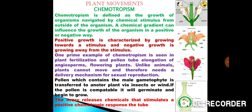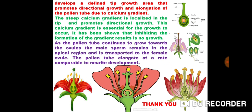The ovary releases chemicals that stimulate a positive chemotropic response. The tube develops a defined tip growth area that promotes directional growth and elongation of the pollen tube due to a calcium gradient. The steep calcium gradient located at the tip promotes directional growth and is essential for growth to occur.